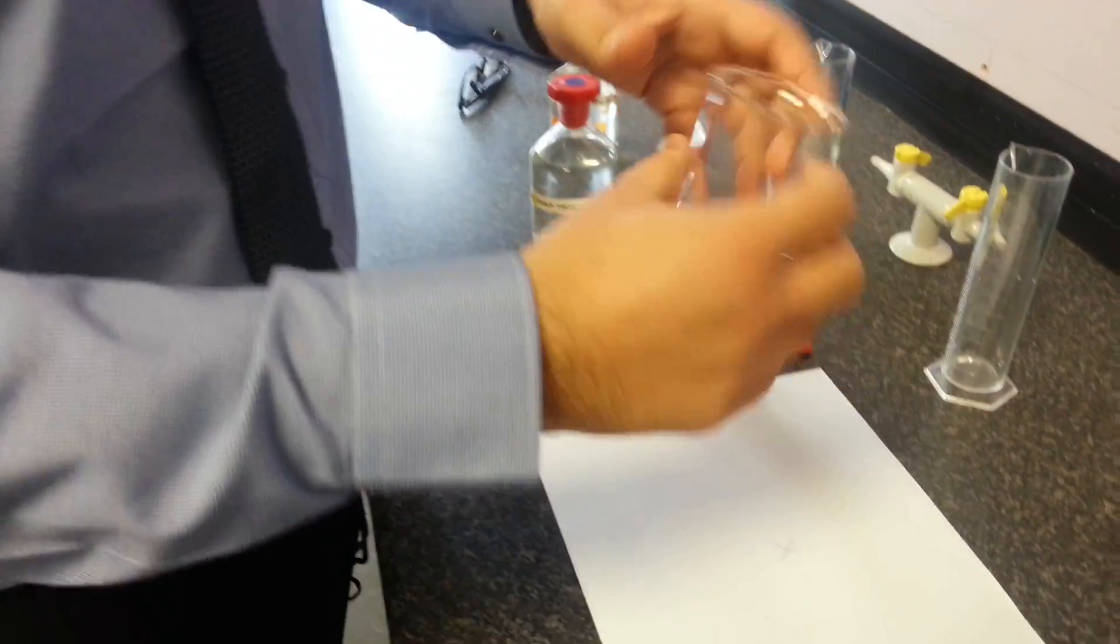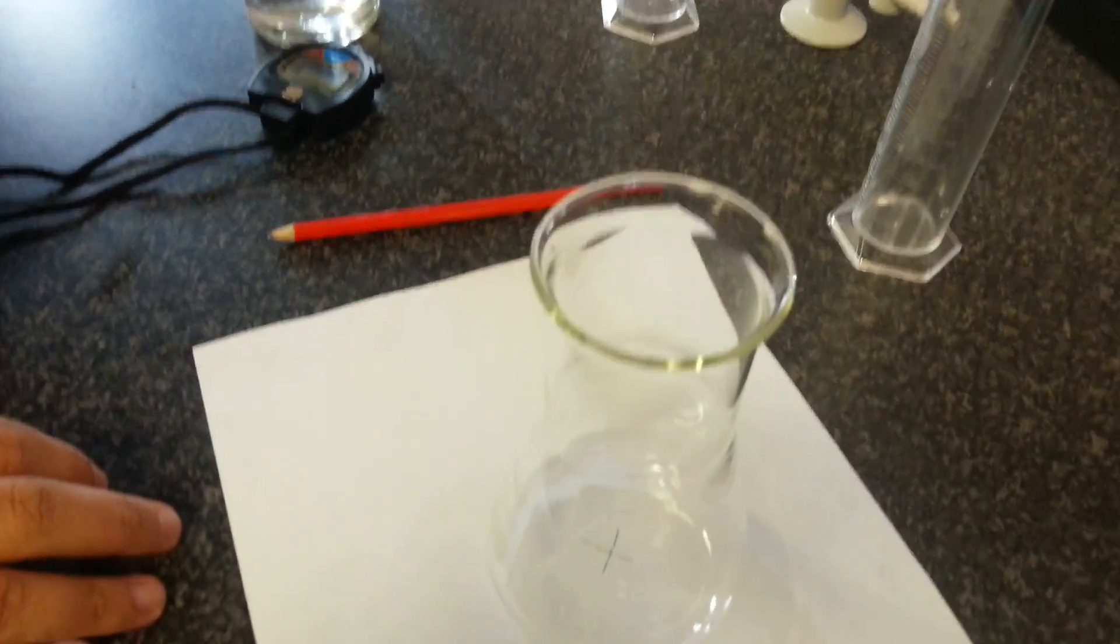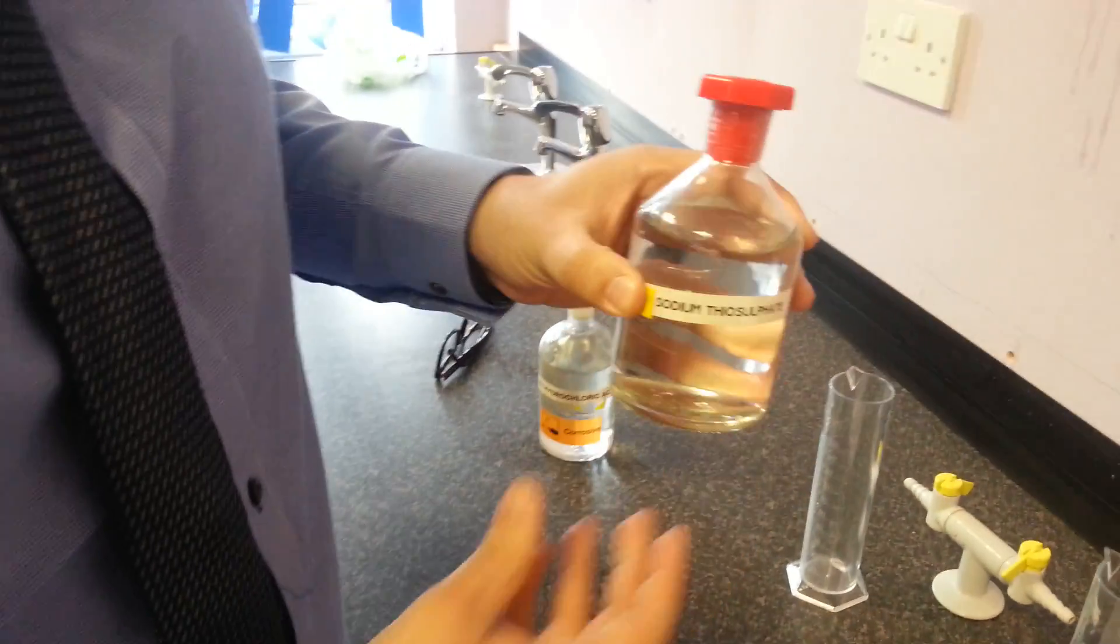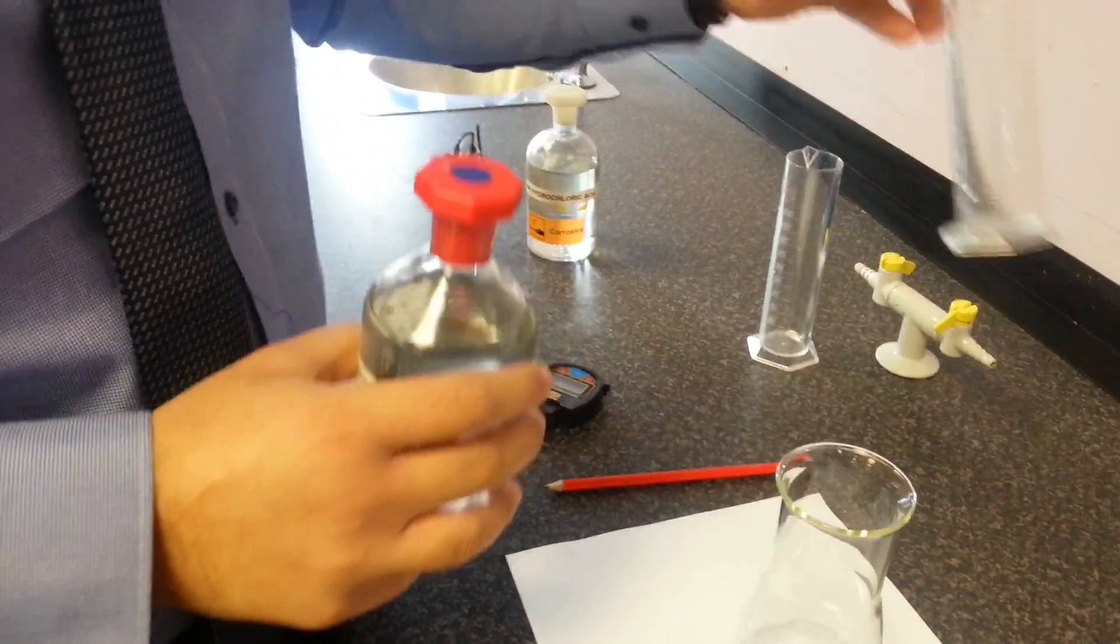Then you're going to get your conical flask, place the conical flask on top of the cross and then pick up your sodium thiosulfate, should be labeled sodium thiosulfate. What you're going to do is measure out using a measuring cylinder.